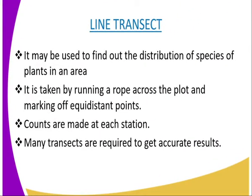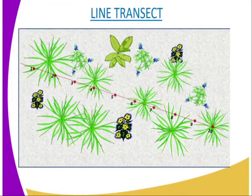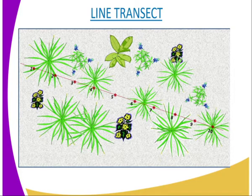We are going to start with the line transect, whereby a line transect may be used to find out the distribution of plants in an area. A line transect is taken by running a rope across the plot and marking of equidistant points. Now a diagrammatic representation of the same will help you understand what is being explained.